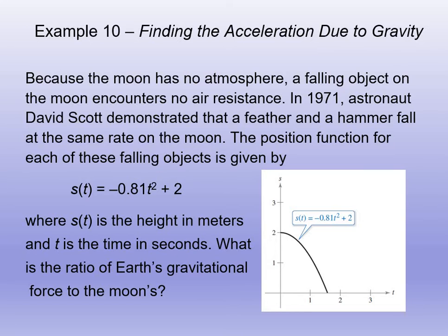The position function for each of these falling objects is given by the equation s of t equals negative 0.81 t squared plus 2, where s of t, the position, is the height in meters and t is the time in seconds. What is the ratio of the Earth's gravitational force to the moon's?